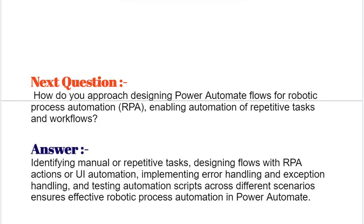Next question: How do you approach designing Power Automate flows for robotic process automation (RPA), enabling automation of repetitive tasks and workflows? Identifying manual or repetitive tasks, designing flows with RPA actions or UI automation, implementing error handling and exception handling, and testing automation scripts across different scenarios ensures effective robotic process automation in Power Automate.